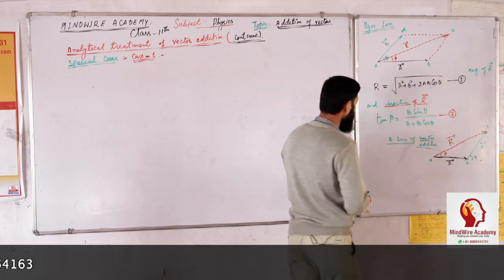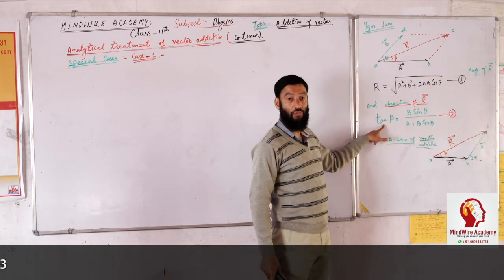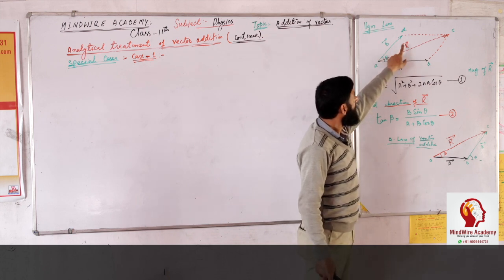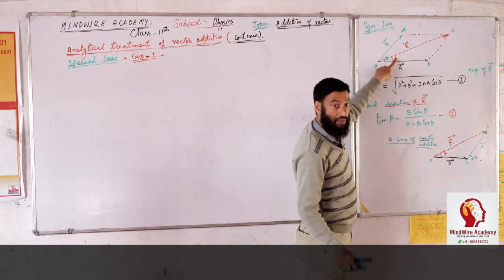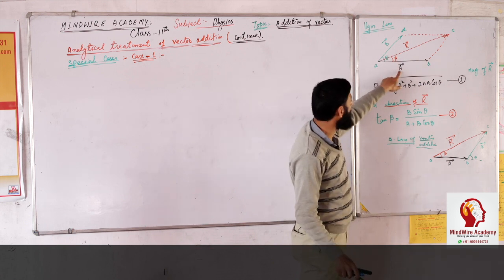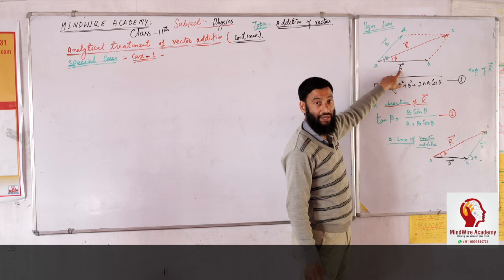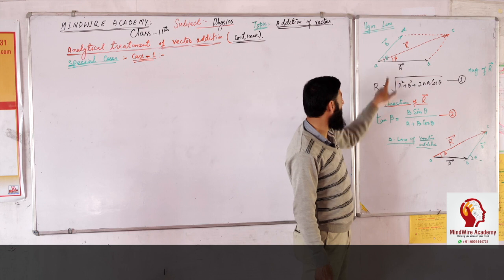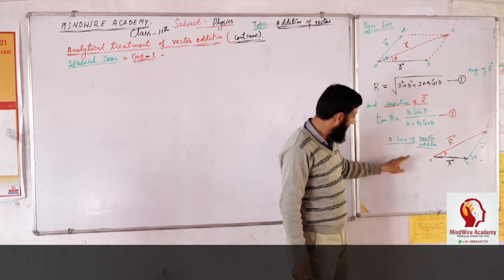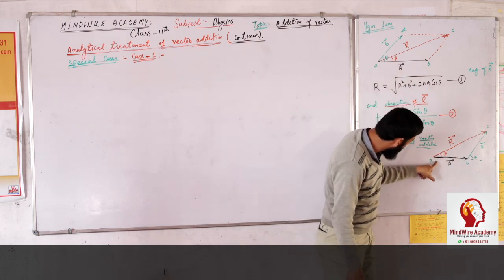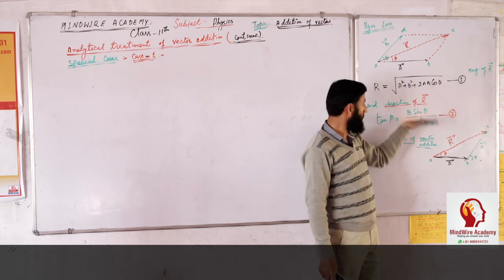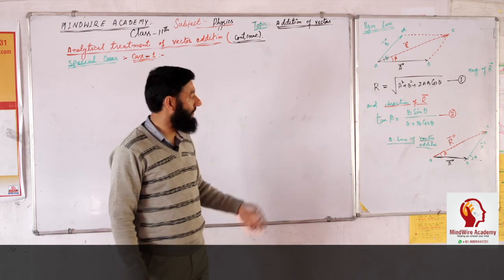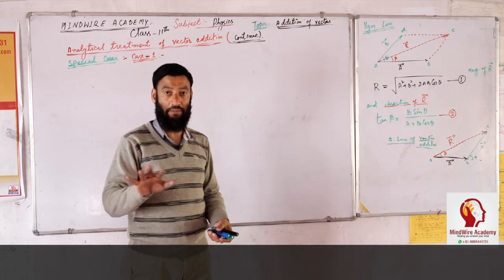This gives the direction of the resultant vector R. The vector R makes an angle beta with respect to the first vector A. So beta is the angle which the resultant makes with vector A, and tan beta gives the direction. This is the same for both cases — whether you are discussing the triangle law or the parallelogram law of vector addition, you follow the same mathematical procedure.